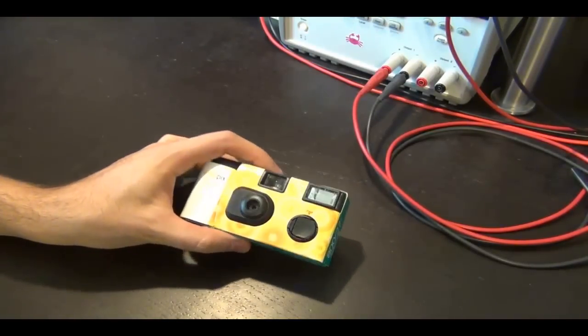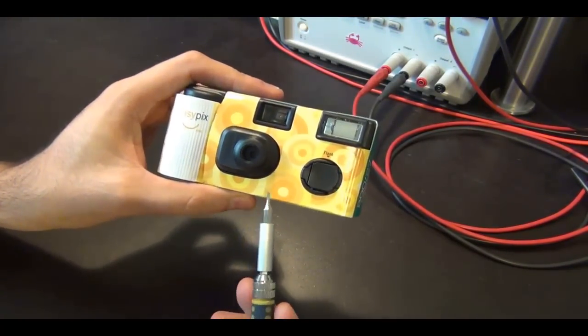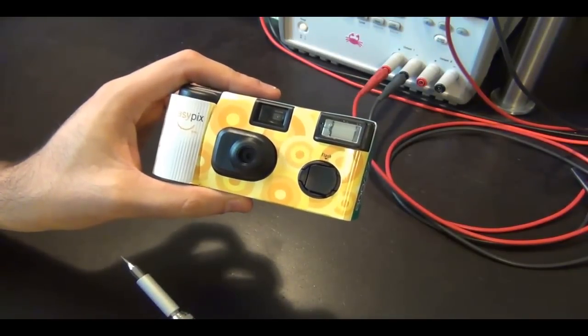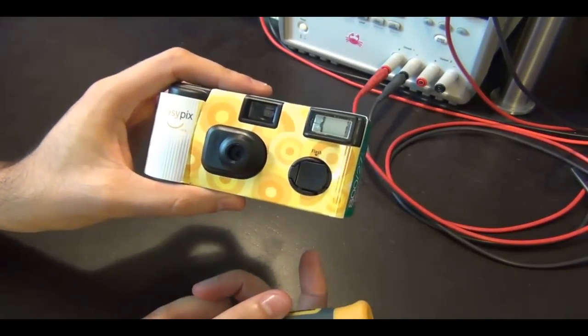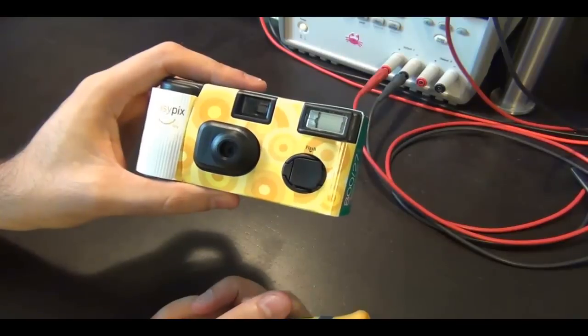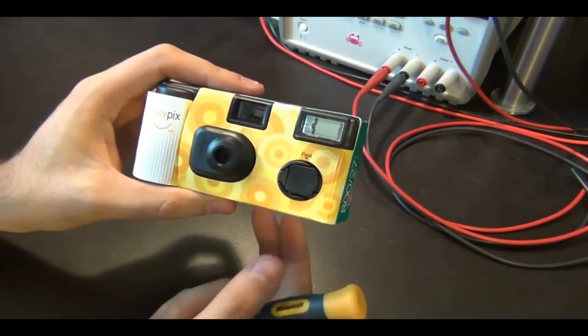Okay, here we have a disposable camera with a flash built-in. Before we take this apart, I have to warn you that you should only do this at home if you have experience with high-voltage circuits, because even if the camera hasn't been used for a while, the capacitor inside may hold enough charge to give you a nasty shock. So never do this unless you have experience with this type of circuits.